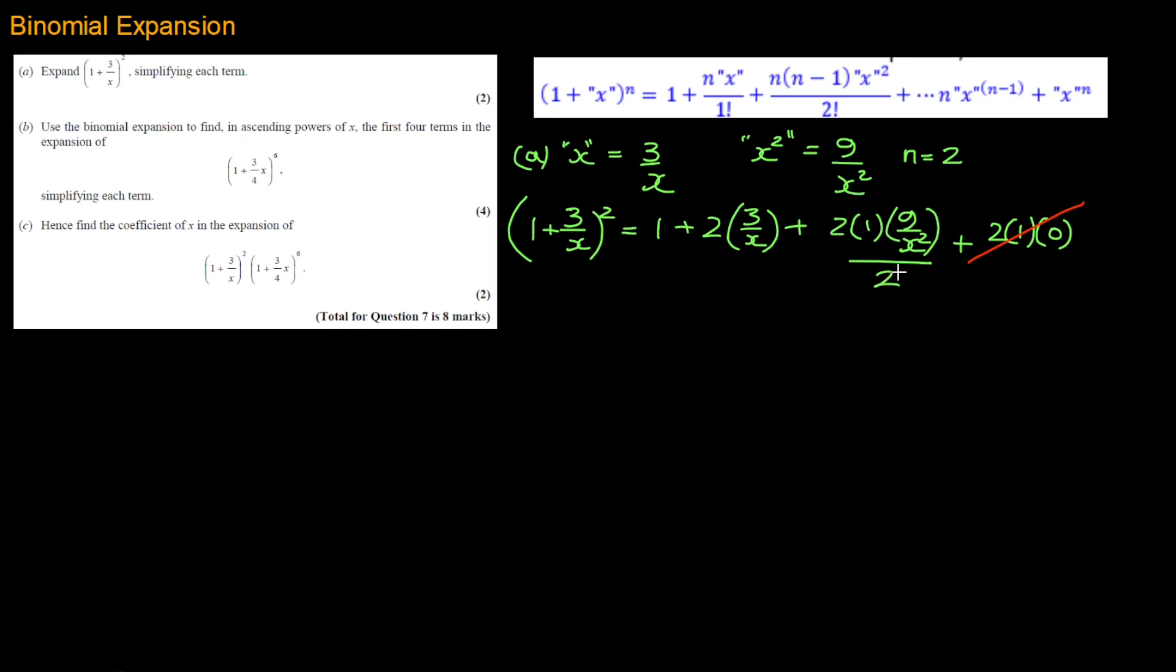Right, it's now a matter of simplification. This 2 will cancel with this 2. So I get 1 plus 2 times 3 over x is 6 over x, plus, well, what we're left with is simply 9 over x squared. And that will be your answer to part A.